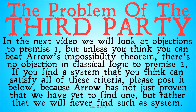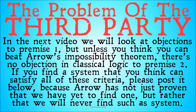In the next video, we'll look at objections to premise 1. But unless you think you can beat Arrow's Impossibility Theorem, there's no objection in classical logic to premise 2. And as shown, the argument is a logically valid syllogism. So the only place a proponent of the third party could object is in premise 1. If you find a system you think can satisfy all these criteria, please post it below — because Arrow hasn't just proven that we have yet to find one, but rather that we can never find such a system.